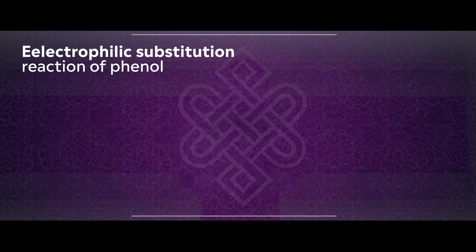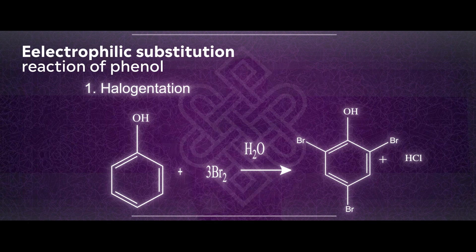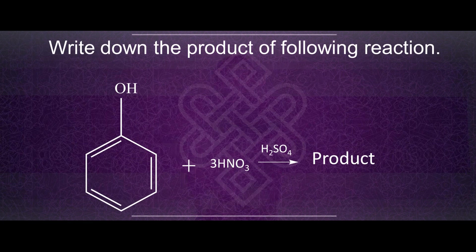Now let's look at the electrophilic substitution reaction of phenol. You already know that when an electron-donating group is present, the substituent will be placed at ortho and para positions. Write down the product formed and check your answer. In halogenation of phenol, the incoming electrophile is placed at ortho and para positions. Try the question yourself.